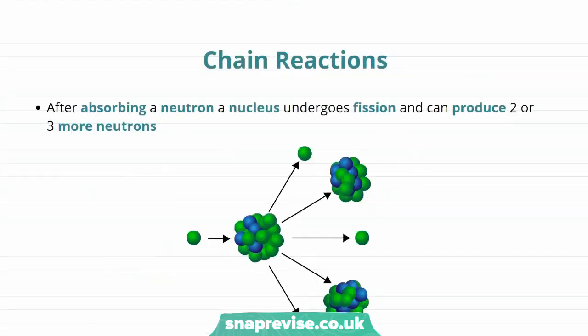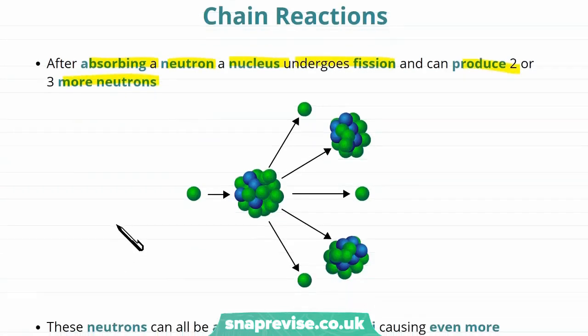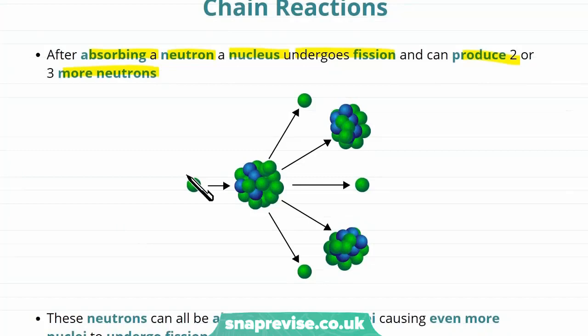It's all very well having one fission occur, but to keep generating electricity we need to keep having lots and lots of nuclei that keep undergoing fission. Well, after absorbing a neutron we know that a nucleus undergoes fission and then produces two or three more neutrons. So the nucleus takes in one neutron and produces three more neutrons.